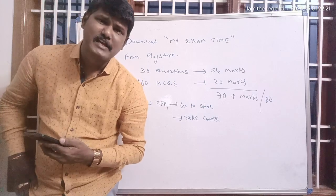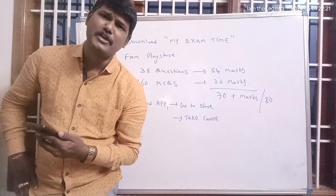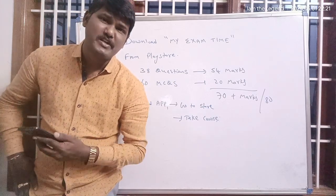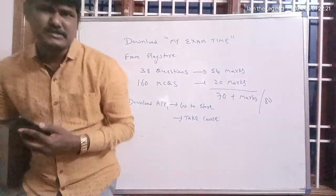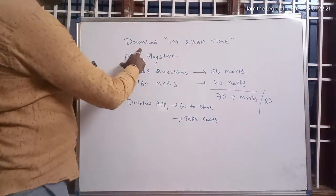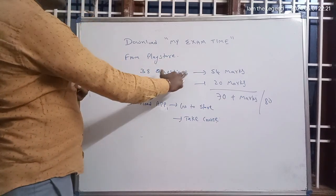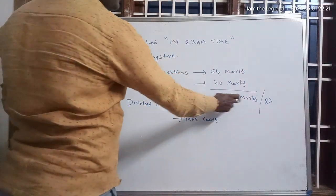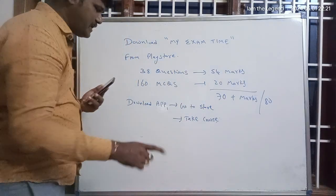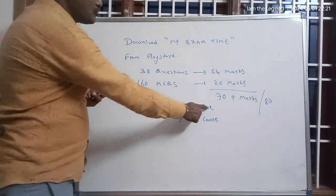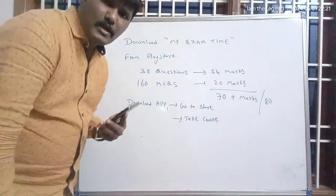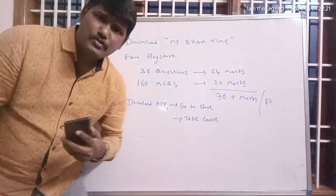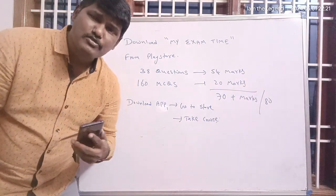I wish you all the best, dear students who are writing the Second PUC exam. This time also I am helping you by giving last minute very important questions. Download My Exam Time app from Play Store. 36 questions contain 54 marks, 160 MCQs contain 20 marks, total 70 plus marks you will score out of 80. Download app, go to Store, and take the course.